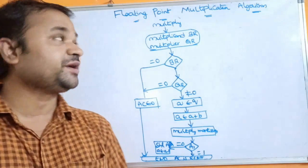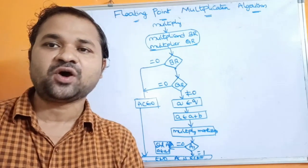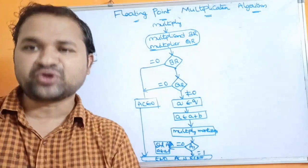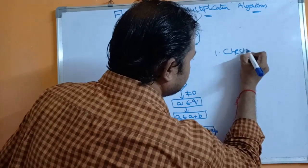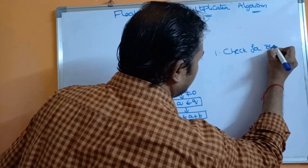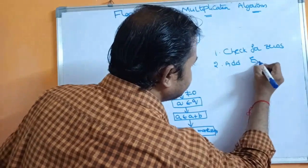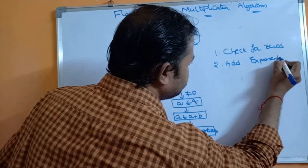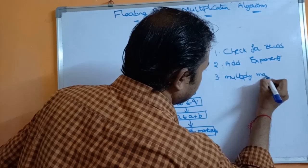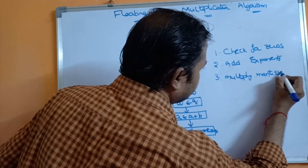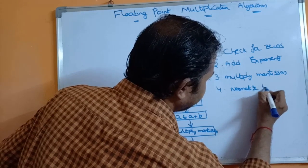Let's look at the floating point multiplication algorithm. We can perform multiplication on floating point numbers using four steps. The first step is to check for zeros — we check whether the multiplicand or multiplier is zero or not. The second step is to add the exponents. The third step is to multiply the mantissas. The fourth step is to normalize the result.